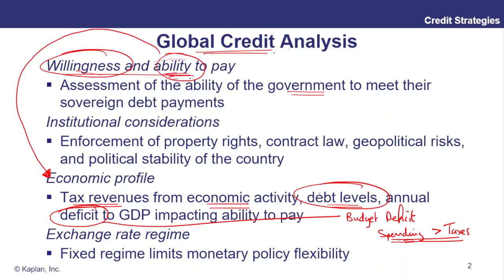The other thing about governments is that they might choose to not recognize their debt. That's something a government can do because they make the rules and the laws. They can call what's known as a moratorium or repudiation on their debt. We'd be particularly worried about a government doing that on their international debt. Even if the government doesn't do that, we want to make sure from an institutional perspective that our rights are protected — that no one dismisses the payments owed to us, that contract law is upheld, and that we haven't got any geopolitical risks such as wars or general political instability that could harm our claim on the country's debt.